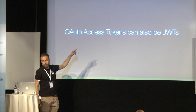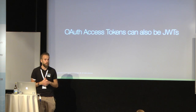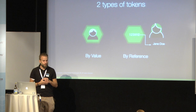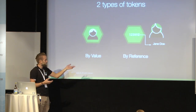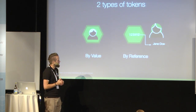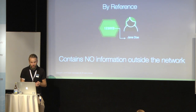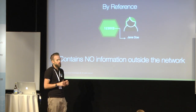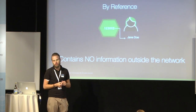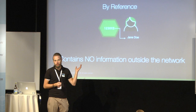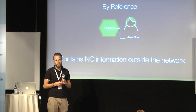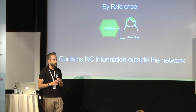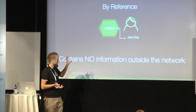JWTs can also be used for access tokens. There are two types of tokens: a by-value token and a by-reference token. A by-reference token is pretty much like a C++ pointer - it's a string that points to a space somewhere where information is located. It means nothing to anyone outside the authorization server - you cannot decode it, decrypt it, or brute force it. It's completely opaque. This is the standard format of an access token.